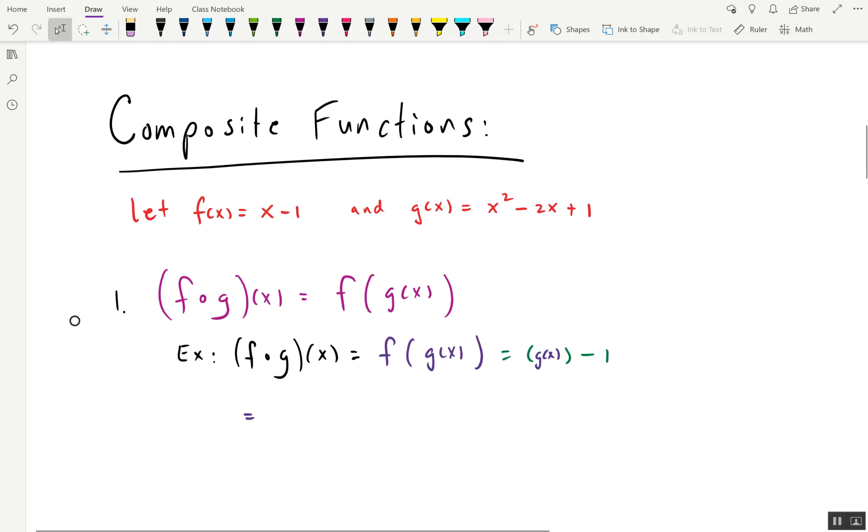So composite functions, there's some new terminology. Let's get that out of the way really quickly. So here we have something that looks like fog, but this is really read as f of g of x. And this is not multiplication, by the way. Not multiplication.